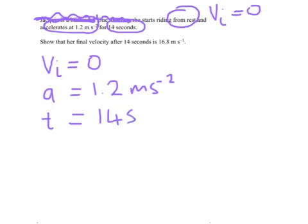There's one more piece of information to write down for clarity — the final velocity. It says show that her final velocity after 14 seconds is 16.8 meters per second. We don't just substitute 16.8 into the equation. We want to calculate it and then compare what we calculate to the provided value. That's the correct approach, not substituting. We'll write the final velocity with a question mark to remind us what we're looking for.